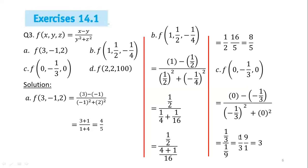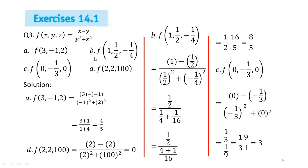For part d, we replace x with 2, y with 2, and z with 0. In the numerator we have 2 − 2 = 0. Since 0 divided by any number is 0, the answer for part d is 0.